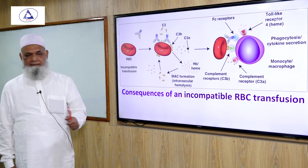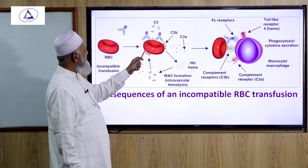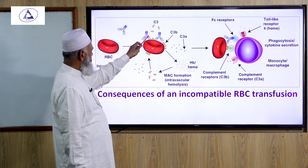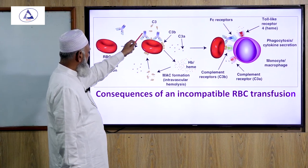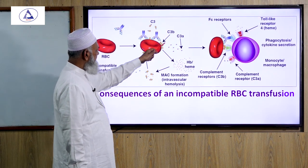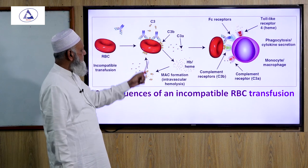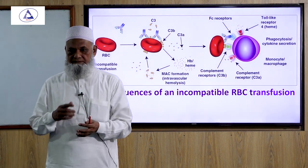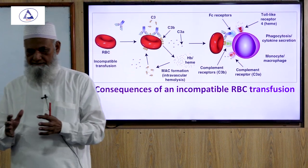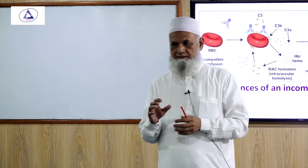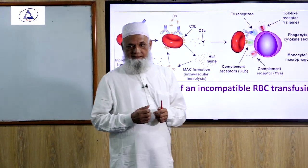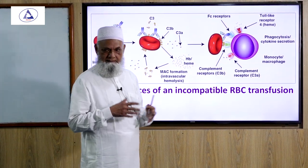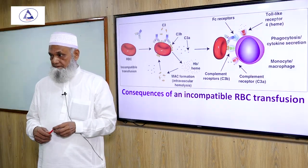Hemolysis occurs in two forms: intravascular and extravascular. In incompatible RBC transfusion, antigen-antibody complex formation activates the classical complement pathway. The complement fragments C5 to C9 assemble to form the membrane attack complex (MAC), which inserts into the red cell membrane and opens communication between the external environment and cytoplasm, resulting in lysis of the RBC — this is intravascular hemolysis.